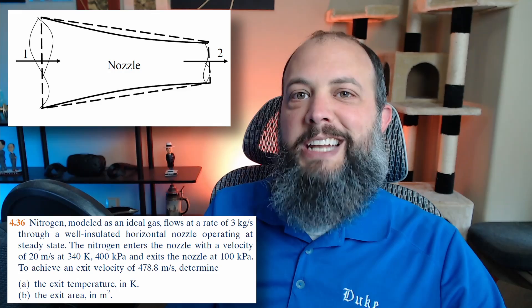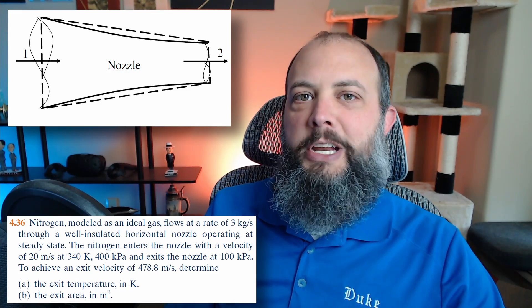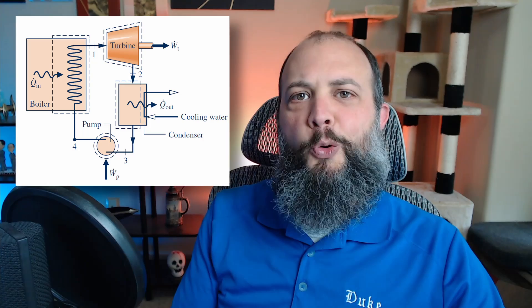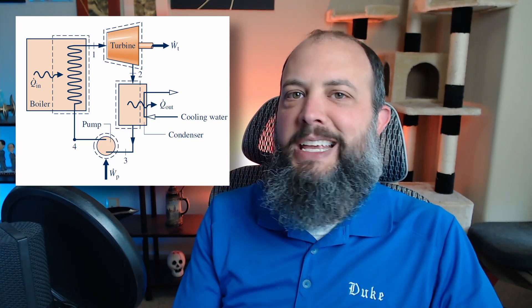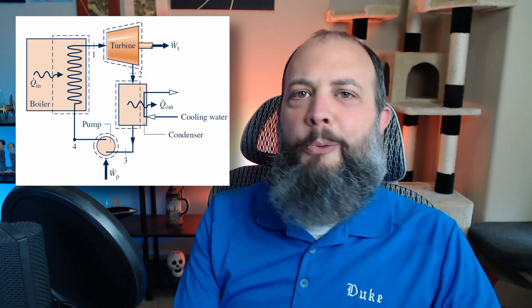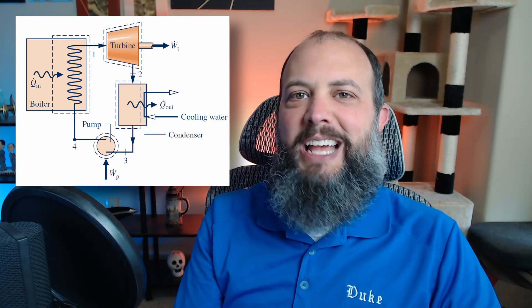So the example problem I want to work today is instead a nozzle. Looking at the four main components of a thermal power plant, most of this course is just looking at energy, how much heat is coming in, how much work is going out. We don't do too much analysis of what's actually happening inside each component.